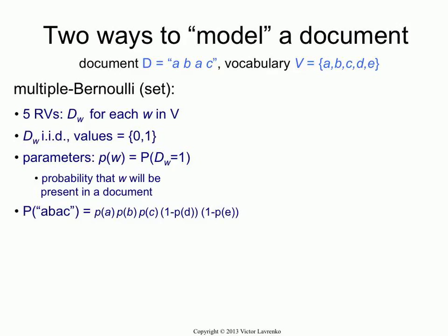So if you have a document A, B, A, C as we have there, the way to compute the probability for that is as follows. You take the probability for A times the probability for B times the probability for C, because they're all independent and identically distributed. And then you take 1 minus P of D — the reason you do that is the word D doesn't occur in the document, so we need the probability of the word not occurring, which is just 1 minus the probability of the word occurring — and the same for word E.